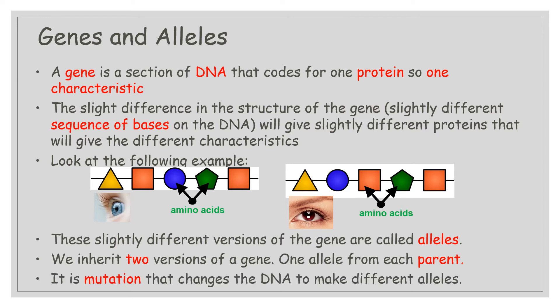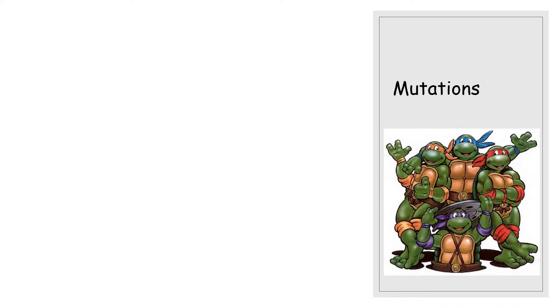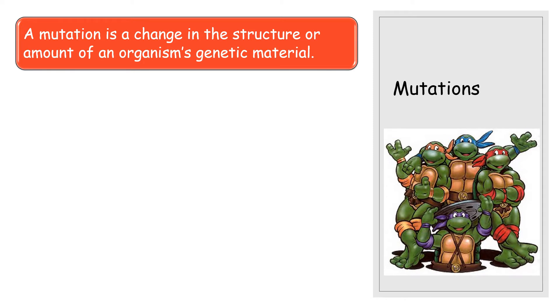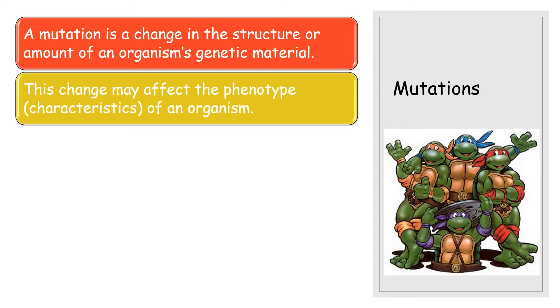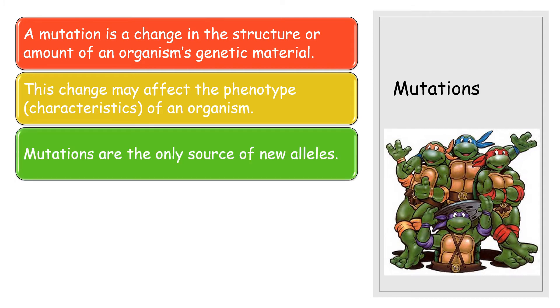It's a mutation that changes the DNA to make those different alleles, so mutations have been involved in our evolution over the course of millions of years. A mutation is a change in the structure or amount of an organism's genetic material, which will then potentially change the phenotype — the characteristics — of an organism. Phenotype, from Key Area 2.4, refers to physical appearance: things like eye colour, hair colour, brown fur or white fur on mice. Mutations are the only source of new alleles, so they add changes into our genome and therefore potential for evolution.